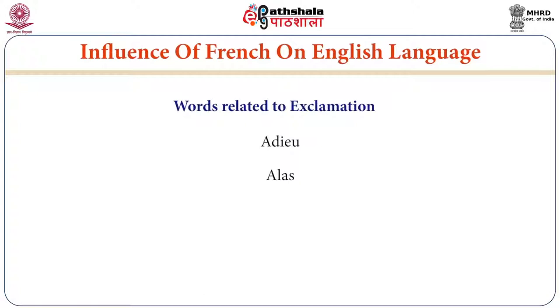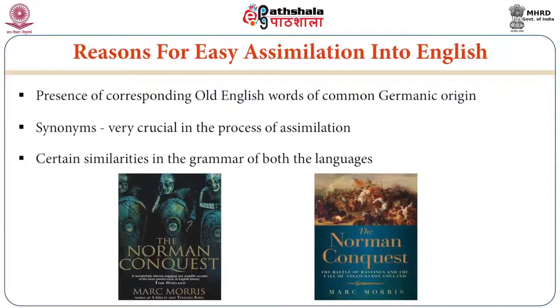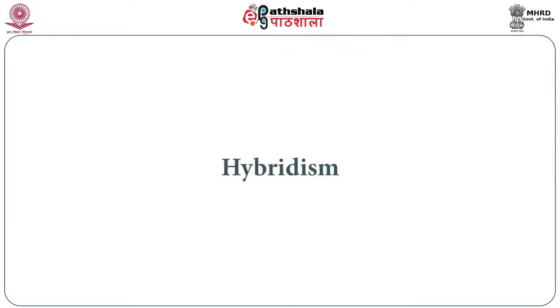After a brief discussion on language, let us look at the reasons for easy assimilation of French into English. Why were French words assimilated into English language? Number one: the presence of corresponding Old English words of common Germanic origin. Number two: synonyms, which were very crucial in the process of assimilation. Number three: certain similarities in the grammar of both languages.